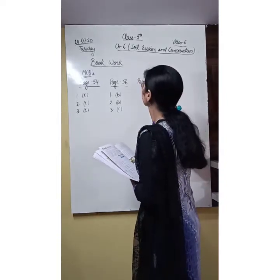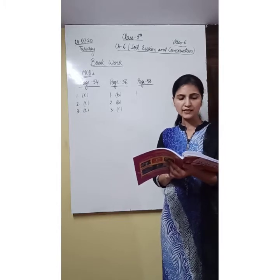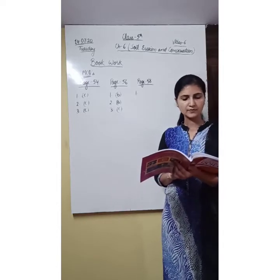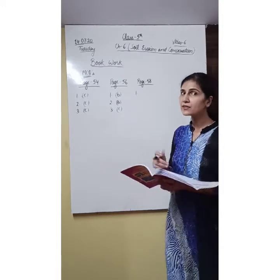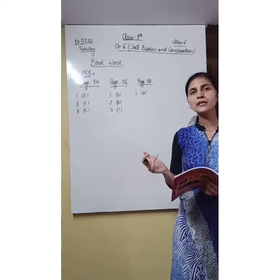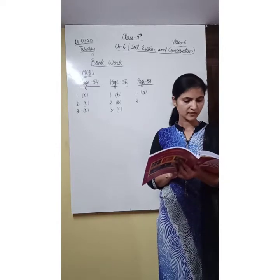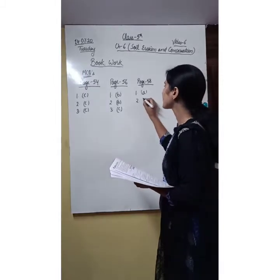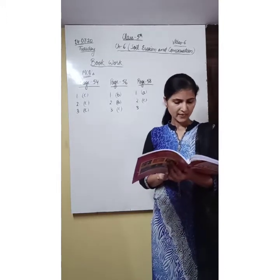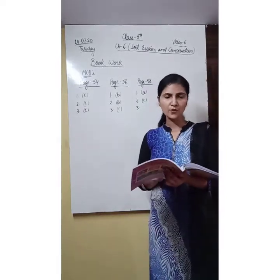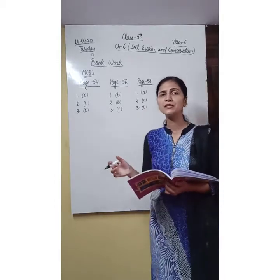MCQs present on page number 58. First: which of the following is not a method of soil conservation? Weathering, step farming, or afforestation? Afforestation means growing plants on a large scale. Its answer will be weathering, because it does not conserve soil. Next: where is a large amount of humus present? The answer is topsoil — the most fertile layer with maximum humus. Next: removal of topsoil is called — the answer is C, soil erosion, which we discussed in detail in the reading part.